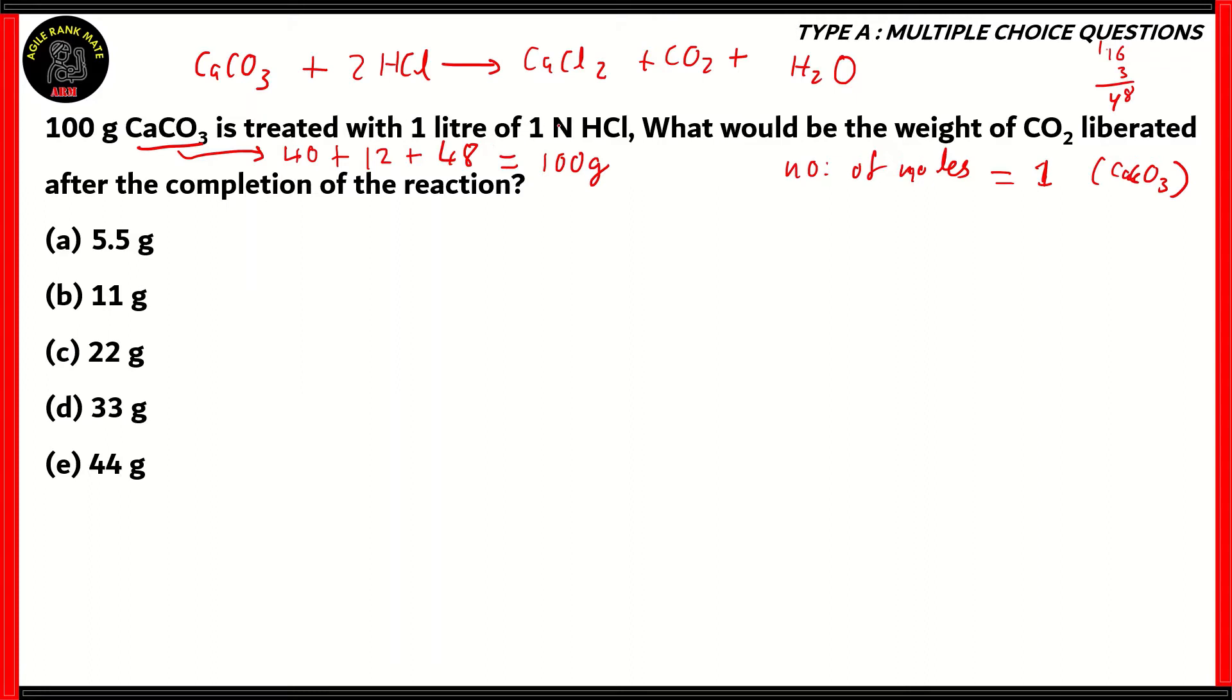How do we find out the number of moles present in 1 normal of HCl? Remember, the given quantity is 1 liter of 1 normal HCl. If 1 normal of HCl is present in 1 liter, it has the same amount of molecules as 1 liter of 1 molar HCl. 1 liter of 1 molar HCl corresponds to 1 mole of HCl, because molarity is the number of moles divided by volume.